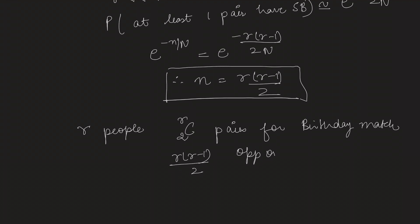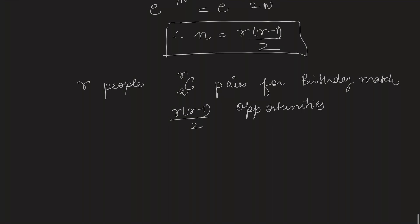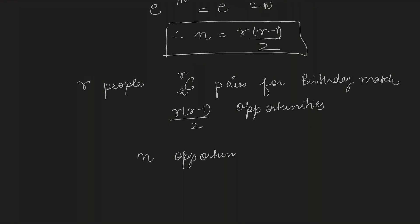In the personal birthmate problem, we have n opportunities because we have n people. So for the probability to be approximately equal, the number of opportunities should be the same, or n should equal r times r minus 1 by 2. This is also a solution.